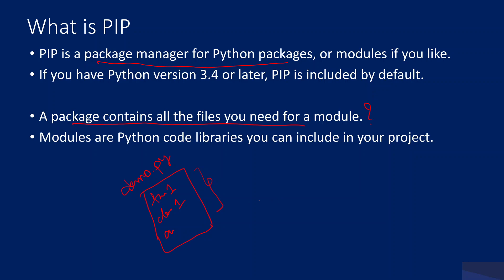Once you have all this code library in the file called demo.py, the moment you want to make use of this file in your code — let's say you are developing a Python code in abcd.py and you want to use function_one — you need to import this module first using the 'import' keyword followed by the module name.